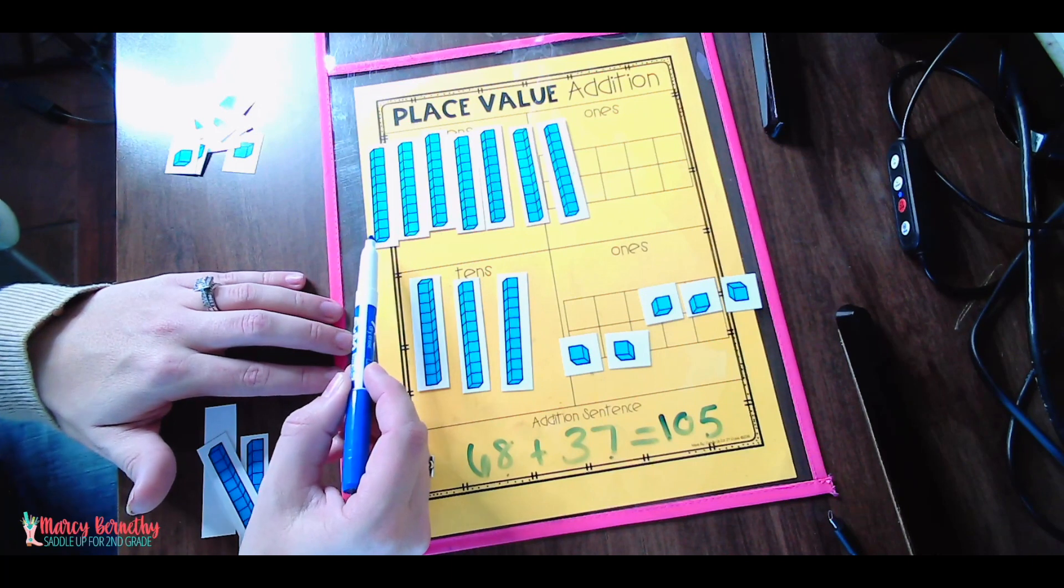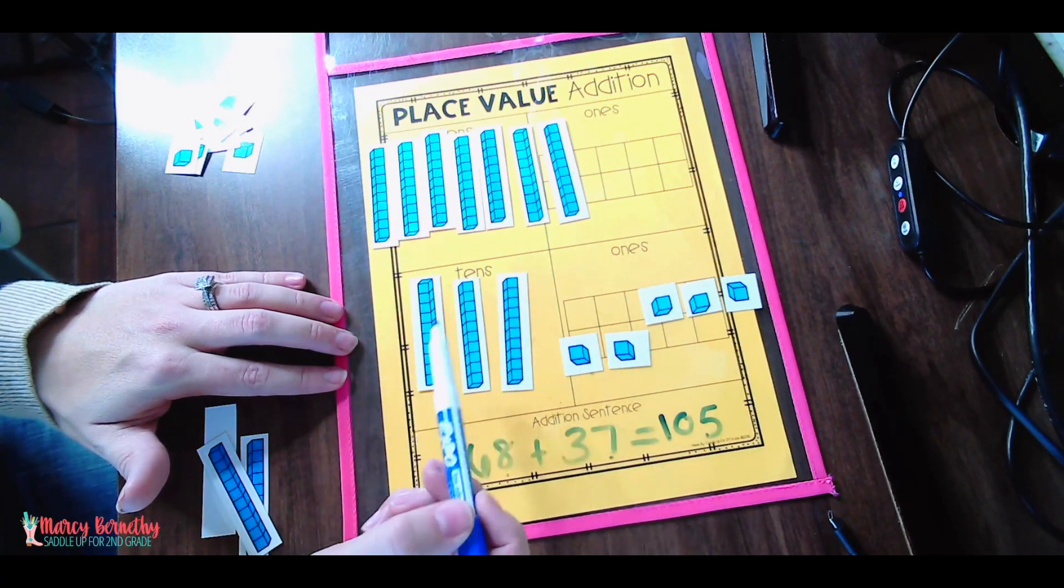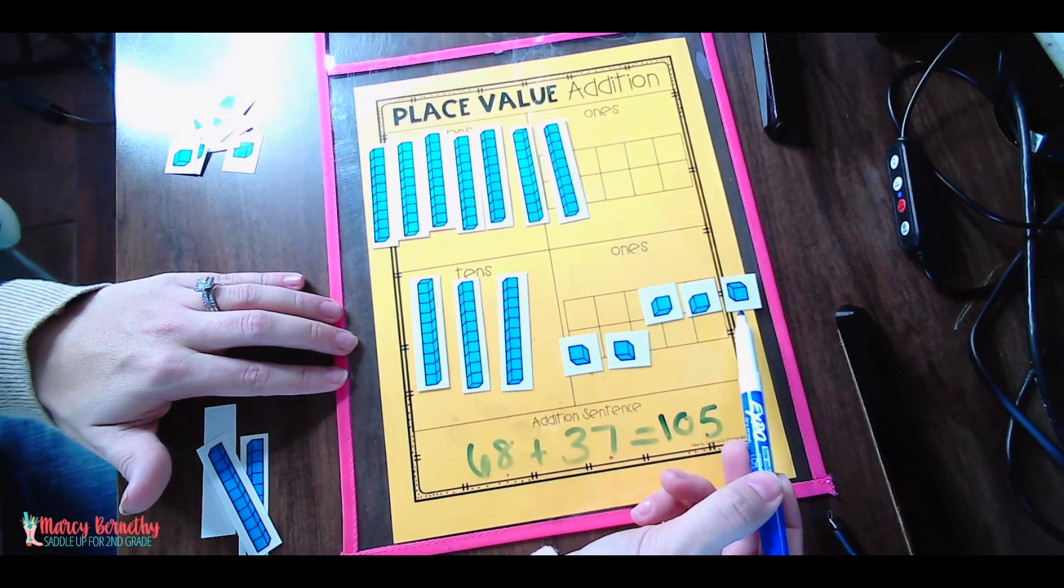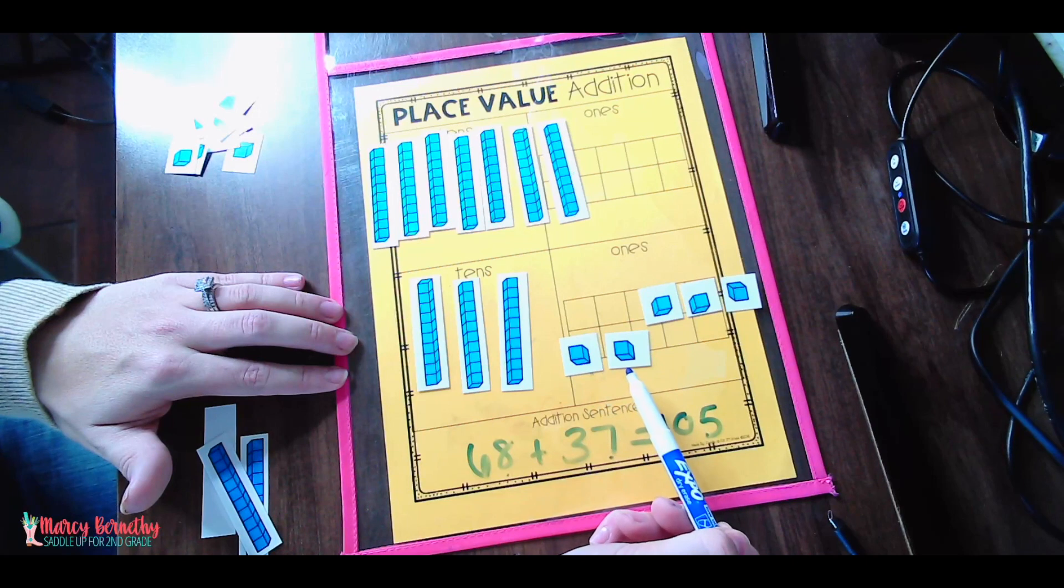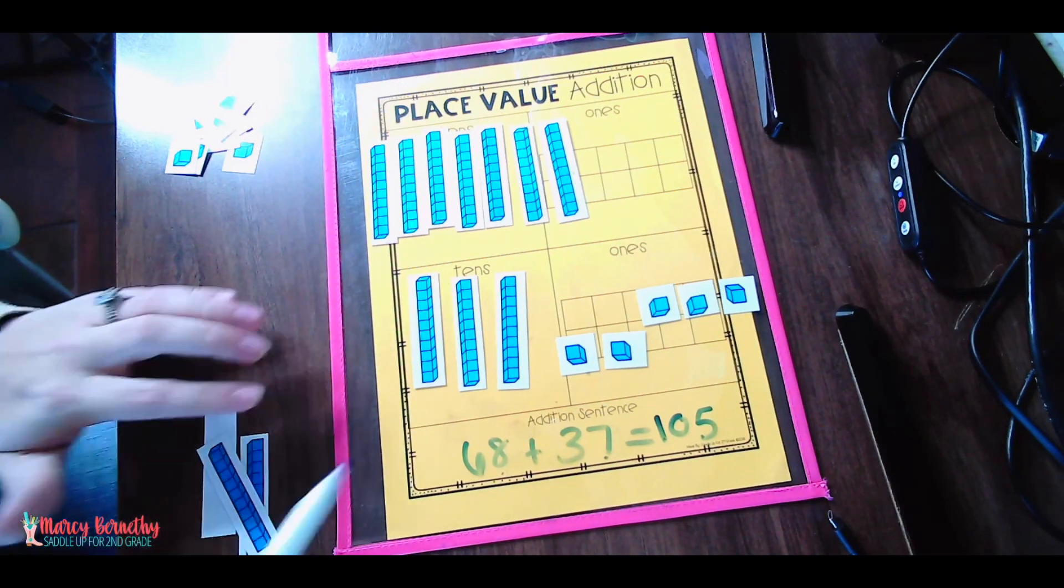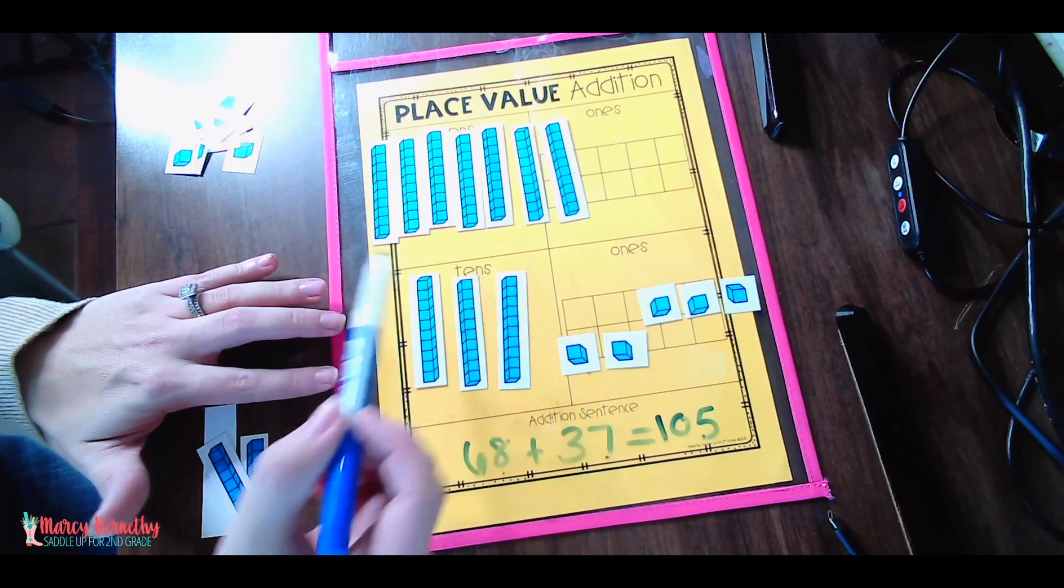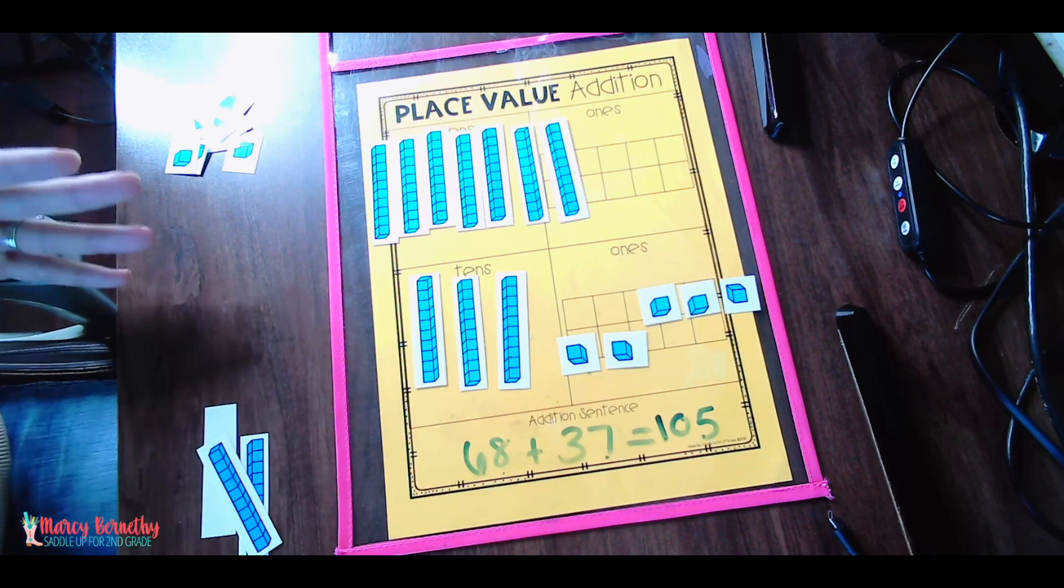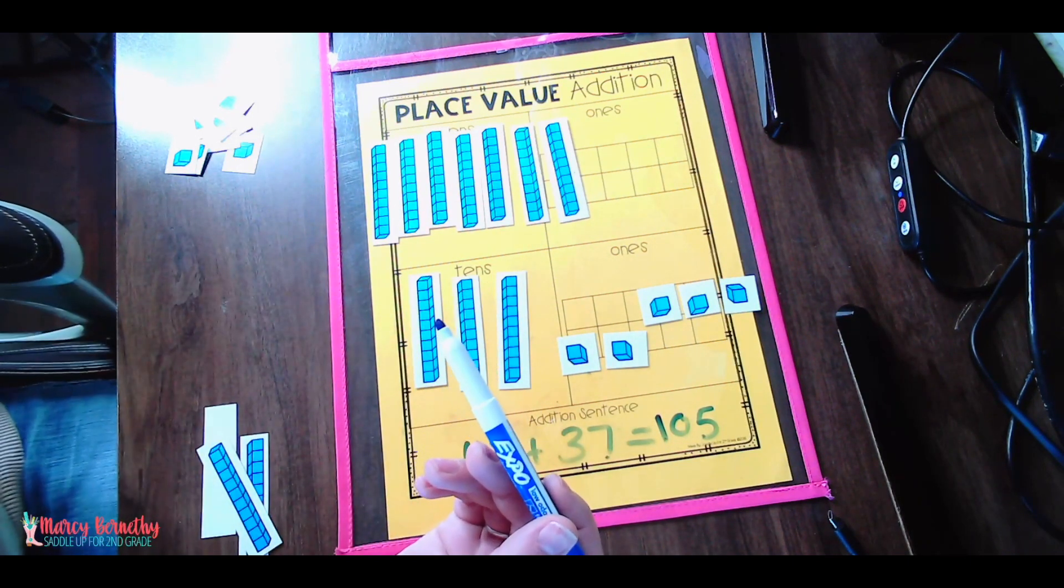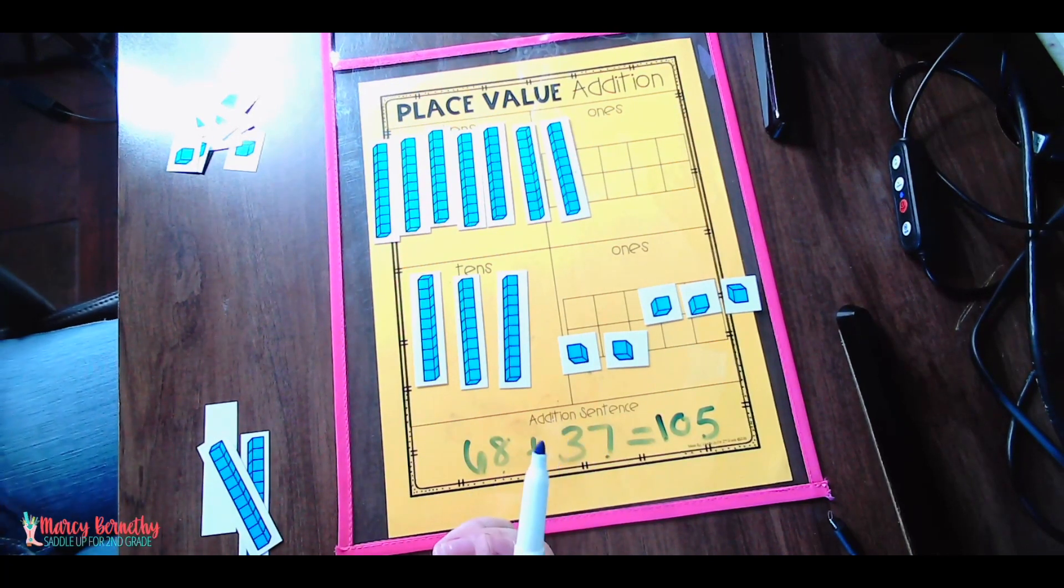So then they can count and solve to check their answer. So we would count out loud together: 10, 20, 30, 40, 50, 60, 70, 80, 90, 100, 101, 102, 103, 104, 105. If you wanted to take it a step further, because you did end up with 10 tens, if you wanted, you could say, Hey, can we make another trade? If we have 10 tens blocks, what can we exchange that out for? And they could trade it out for a hundred block if you would like for them to.